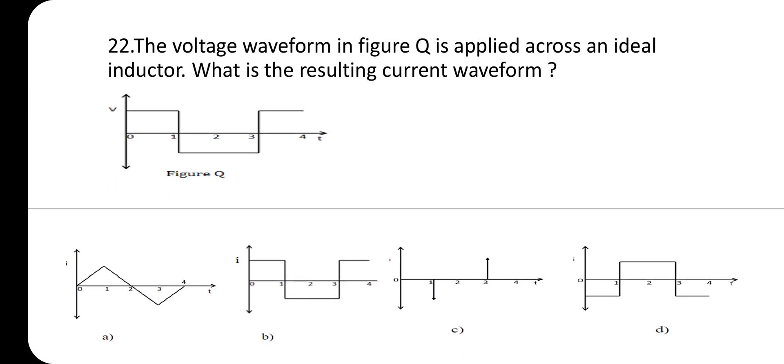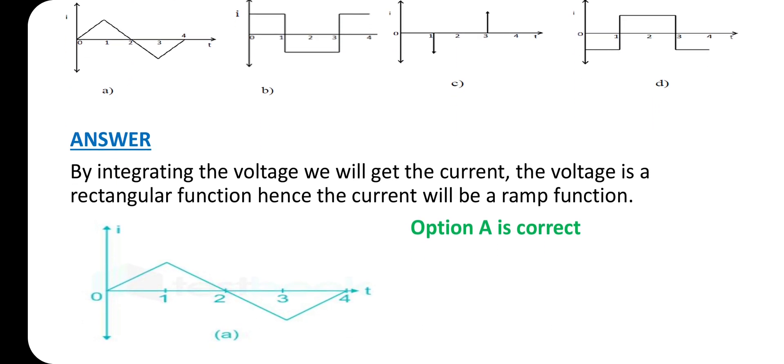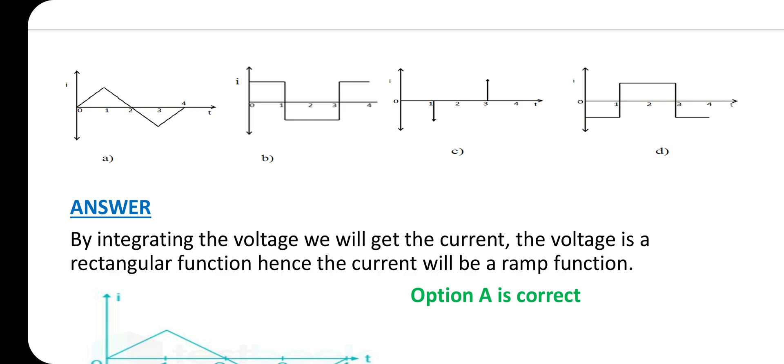Question 22: The voltage waveform in the figure is applied across an ideal inductor. What is the resulting current waveform? Inductors are coils of wire wound around ferromagnetic material. The instantaneous voltage is given by v = L(di/dt). By integrating the voltage, we get the current. Since voltage is a rectangular function, the current will be a ramp function. Choose option A as the correct answer.